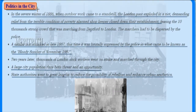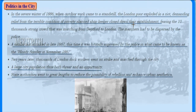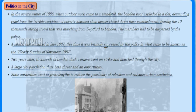In the severe winter of 1886, when outdoor work came to a standstill, the London poor erupted in a riot, demanding relief from the terrible conditions of poverty. Alarmed shopkeepers closed down their establishments, fearing 10,000-strong crowds marching through London. The marchers had to be dispersed by the police. A similar riot occurred in late 1887, and this time it was brutally suppressed by the police in what came to be known as the Bloody Sunday of November 1887.